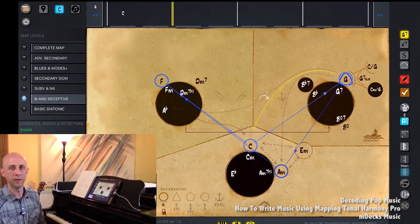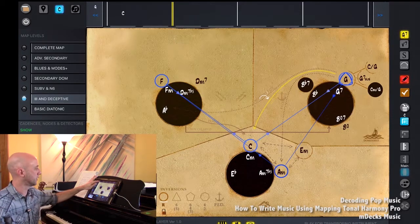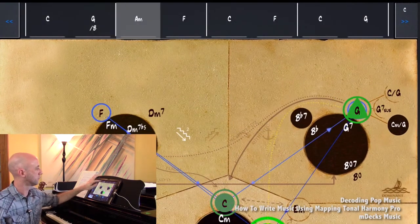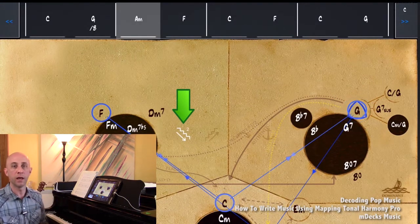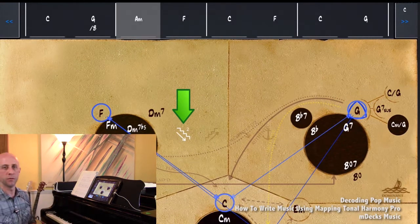We'll talk about variations on that a little bit later too, but you heard the descending bass line, maybe if you're listening closely, that we got by making that G chord a G over B first inversion G chord.